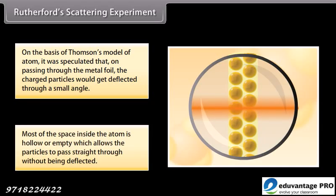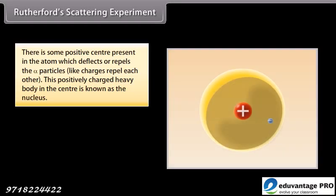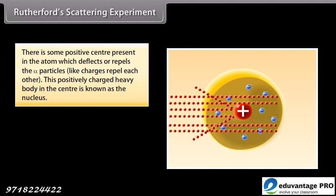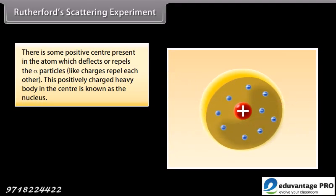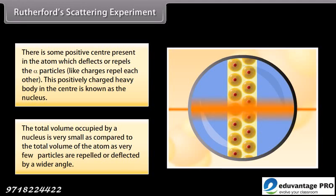Most of the space inside the atom is hollow or empty, which allows the particles to pass straight through without being deflected. There is some positive center present in the atom, which deflects or repels the particles. Like charges repel each other. This positively charged heavy body in the center is known as the nucleus. The total volume occupied by a nucleus is very small as compared to the total volume of the atom, as very few particles are repelled or deflected by a wider angle.